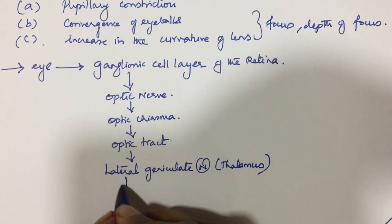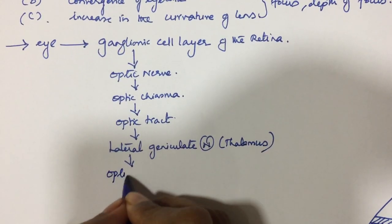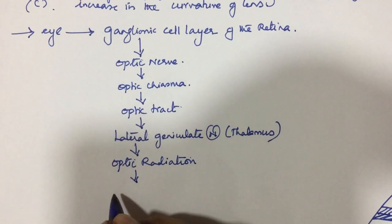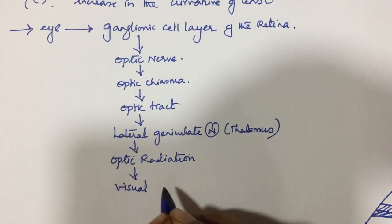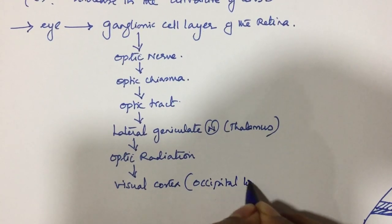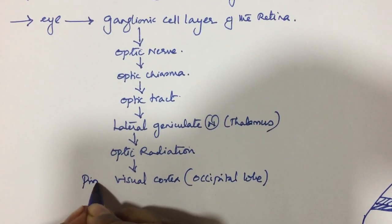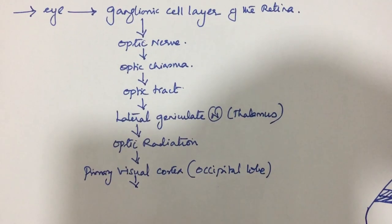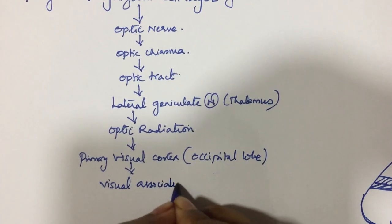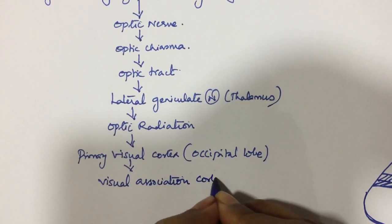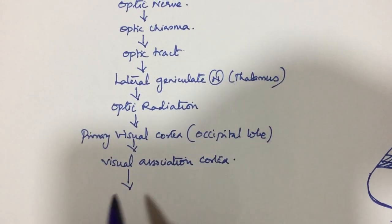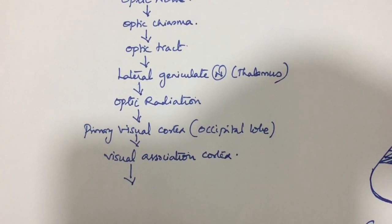From the optic tract to the lateral geniculate body or geniculate nucleus. From the optic radiation it relays in the primary visual cortex of the occipital lobe. The information from the primary visual cortex is then relayed also to the visual association cortex.